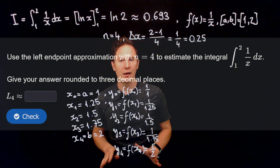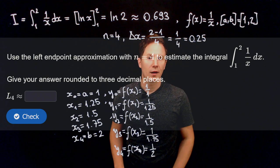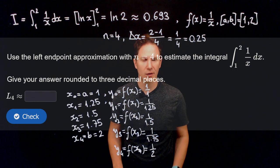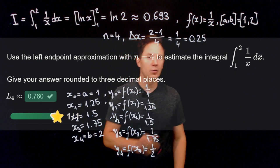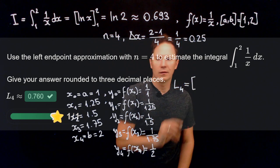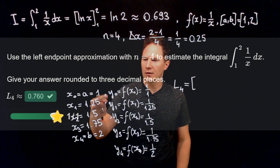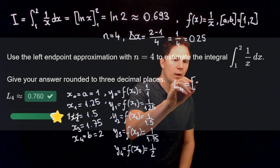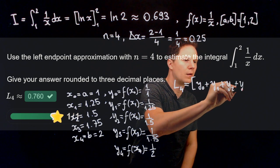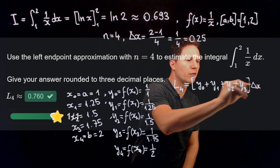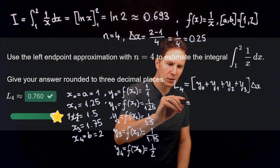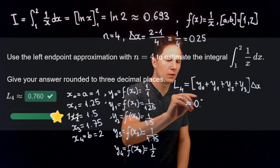With these x and y values, we are ready to set up the left endpoint approximation. The approximation L4 is equal to evaluating the function at the left endpoints of each subinterval — that's y0, y1, y2, and y3 — each multiplied by delta x. So it's these first four y values multiplied by delta x, which is approximately 0.760.